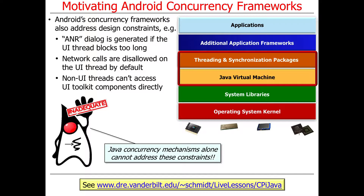As a consequence of these constraints, the Java concurrency mechanisms we've talked about — threads, the executor framework, and all that — really are not adequate to address Android's concurrency constraints by themselves. The concurrency mechanisms work pretty well for background threads, but for the foreground threads, because of these special constraints that Android has, you really can't use the Java stuff by itself.